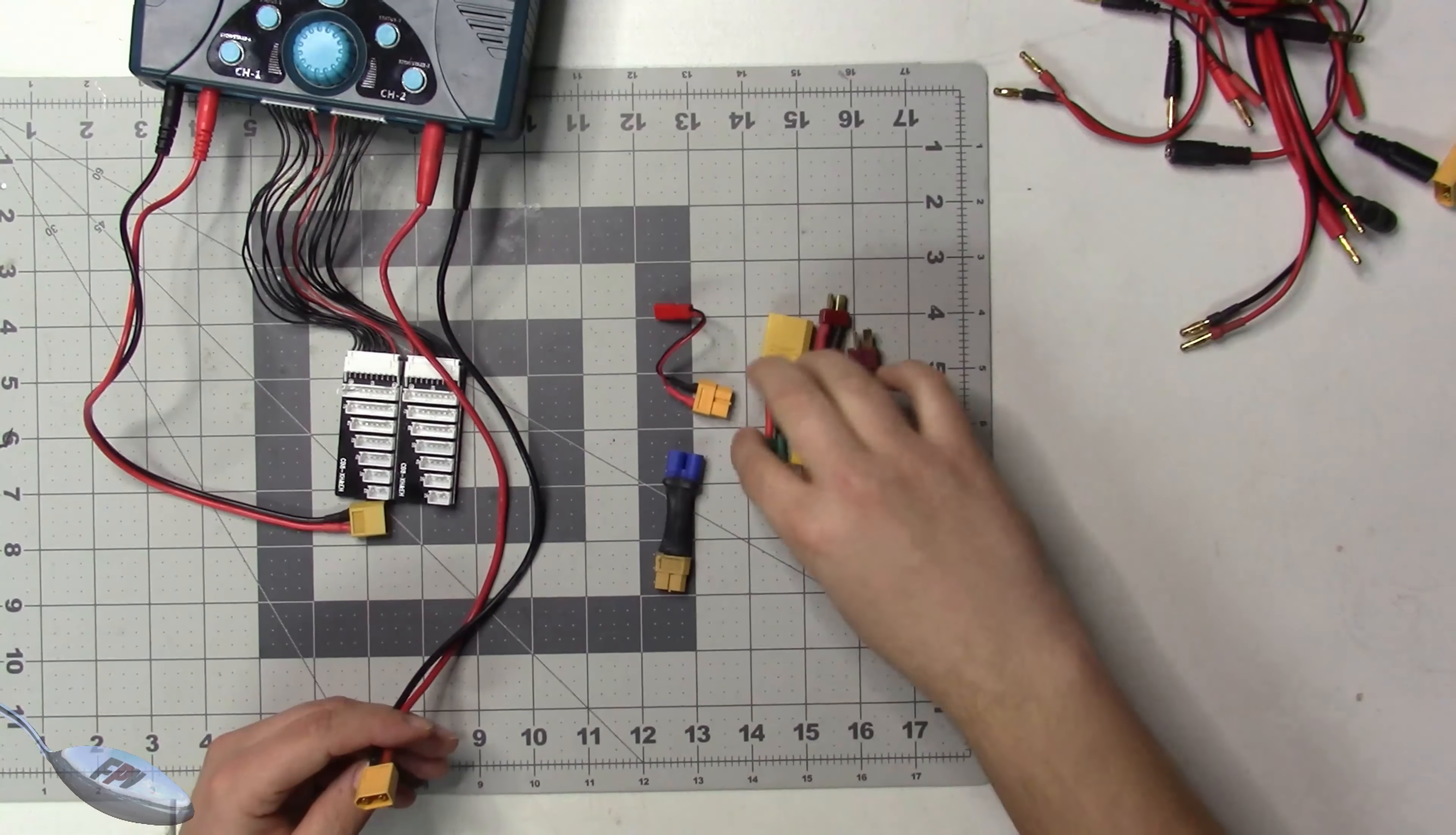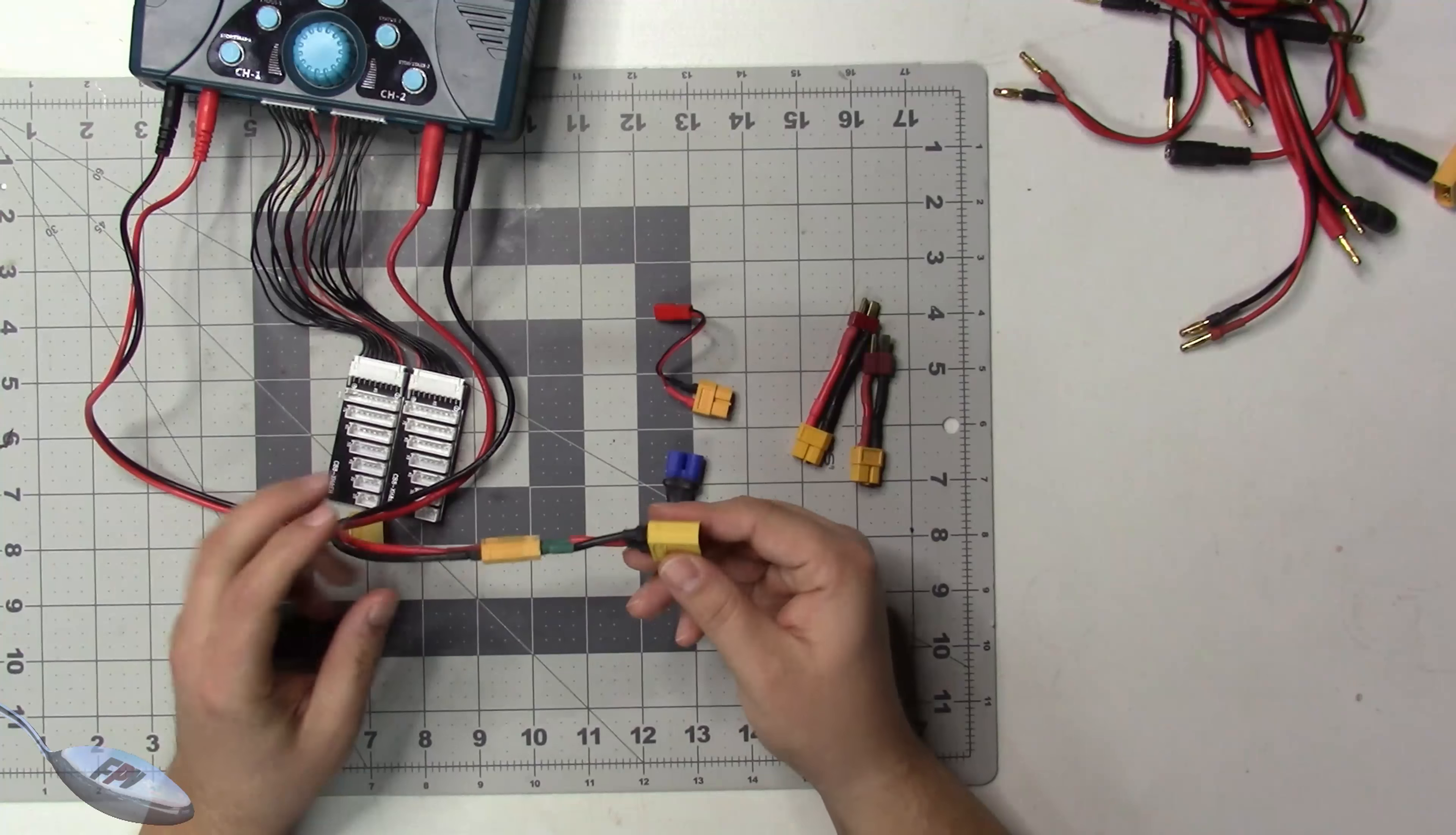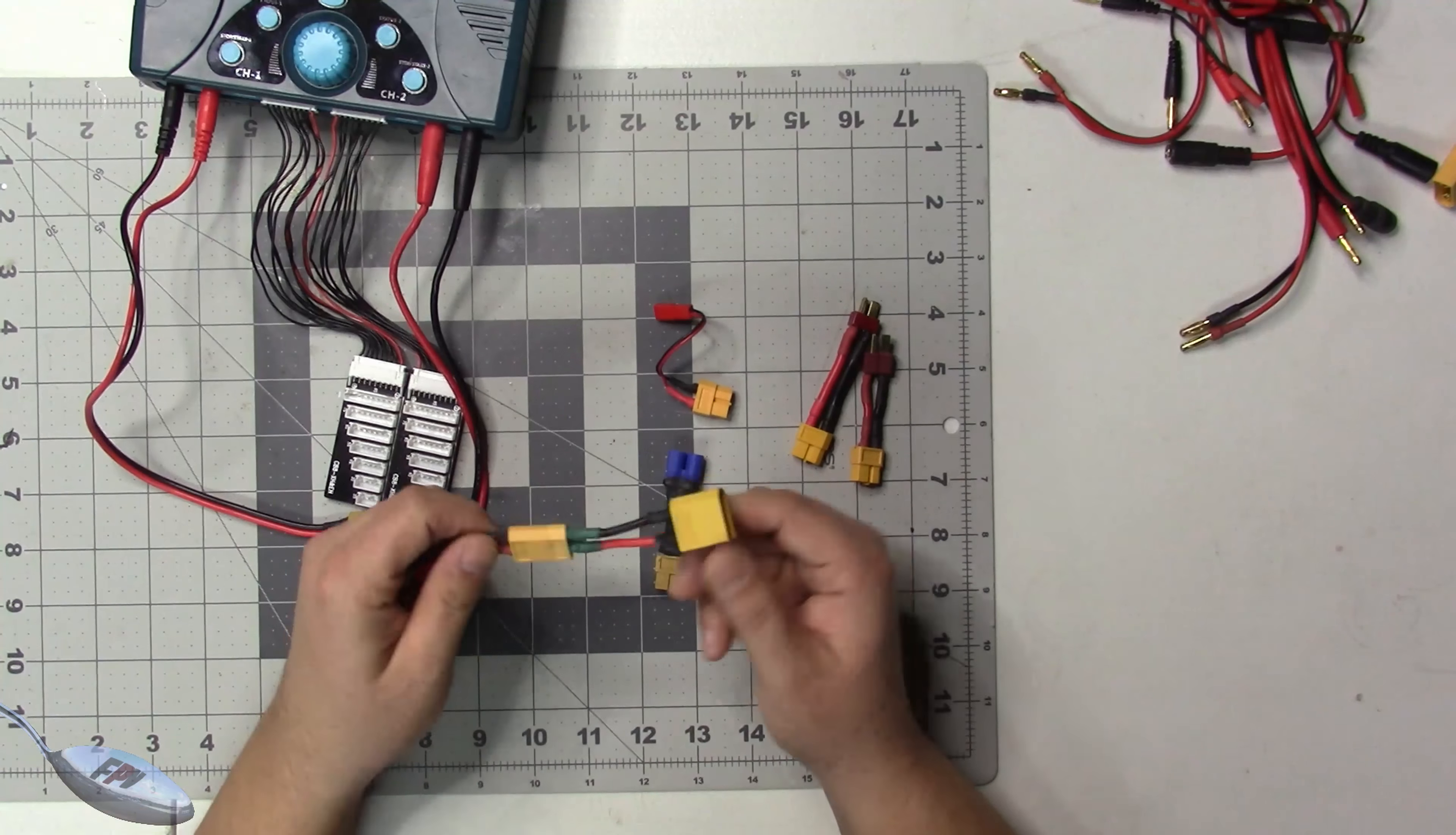The reason I like it this way is because it cleans things up a bit. Now I can charge my XT90 and you might be thinking that's not going to carry all the current. Well, this is 60 amps.